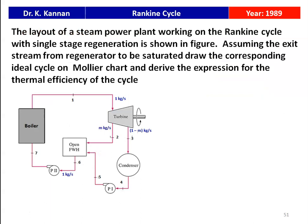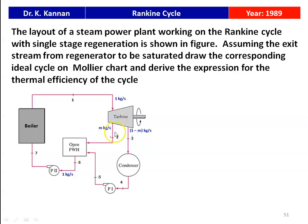The next question is from the 1989 question paper. The layout of a steam power plant working on the Rankine cycle with single-stage regeneration is shown. Assume the exit steam from the regenerator is saturated. Draw the corresponding ideal cycle on the Mollier chart and derive the expression for the thermal efficiency of the cycle. The system has an open feed water heater, turbine, boiler, condenser, pump 1, and pump 2. At point 2, m kg/s of steam is extracted for feed water heating and the remaining (1 - m) kg/s is condensed and pumped to the open feed water heater.